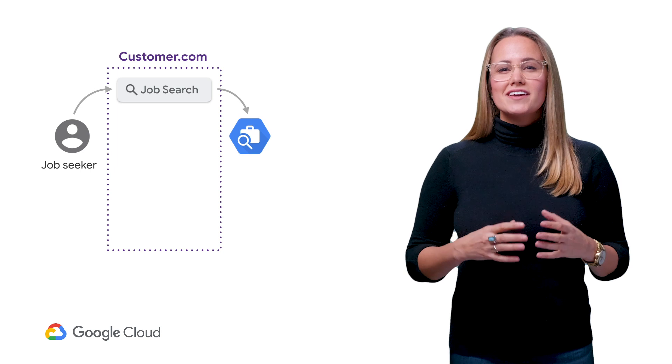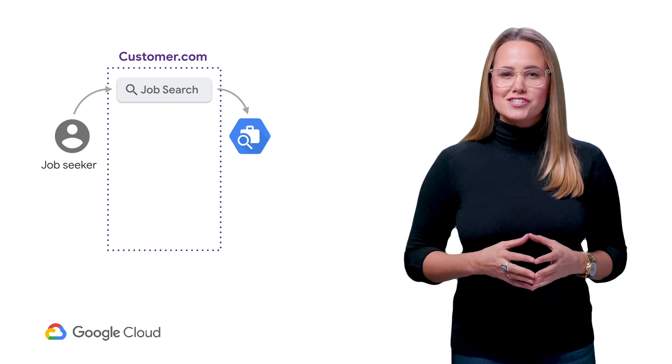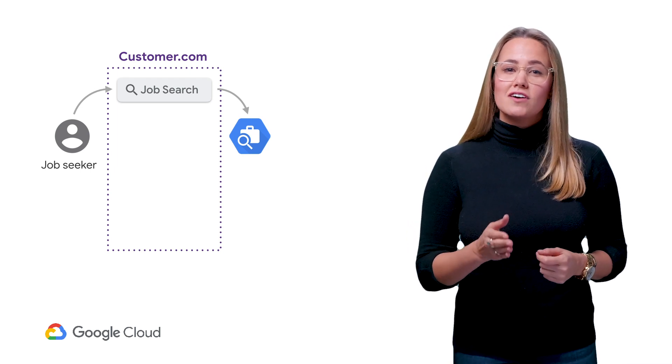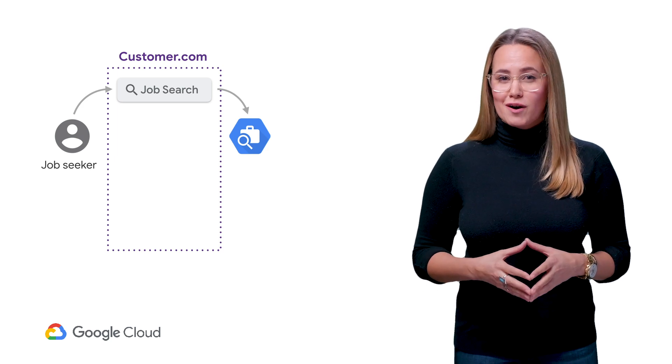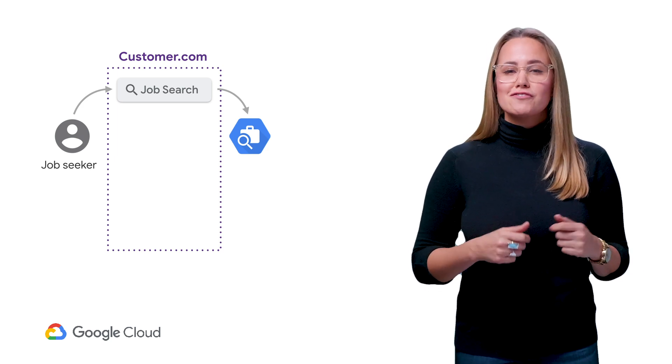One important thing to note about the Job Search API is that it's a search index of your jobs. This means it's intended to work alongside your existing database by mirroring the contents and searching against it in a manner that's optimized to find the most relevant results to a search query. This means it acts something like a middle layer for the underlying system. In order for the API to best determine relevant search results, it stores information that you provide about the jobs and uses a pre-trained machine learning model with your provided data to return relevant results.